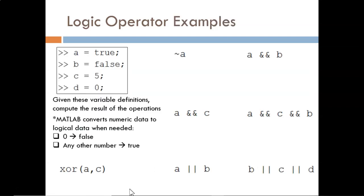Let's see these logic operators in action. In the box are four defined variables. Try to predict the output of each of the seven operations shown here. Remember, the output can only be true or false. Pause the video and then resume when you have tried each one.